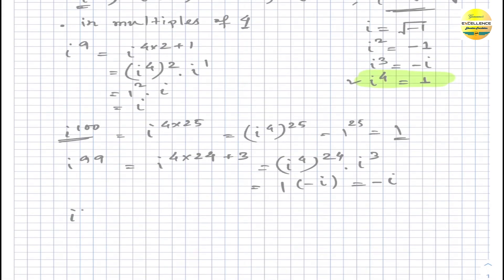Similarly, i to the power 1000 can be written as i to the power (4×250). Since i to the power four is one, one to the power 250 is one. It's very simple.